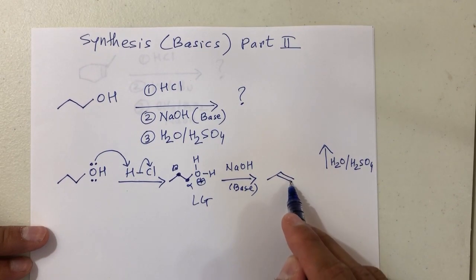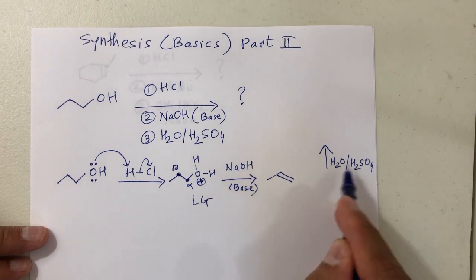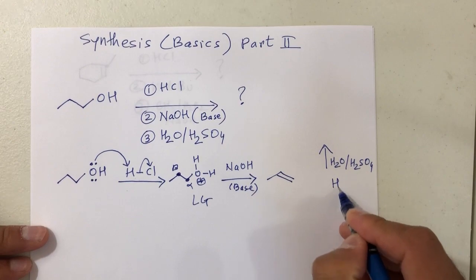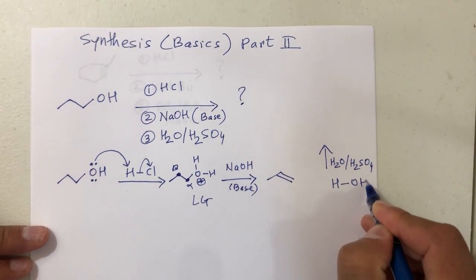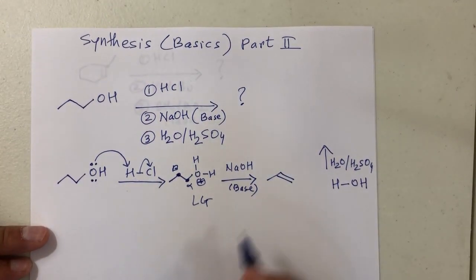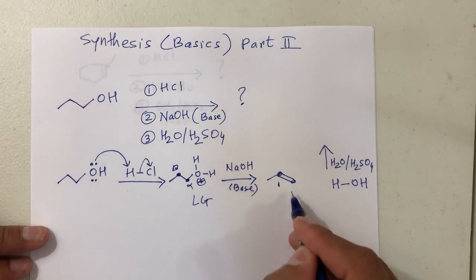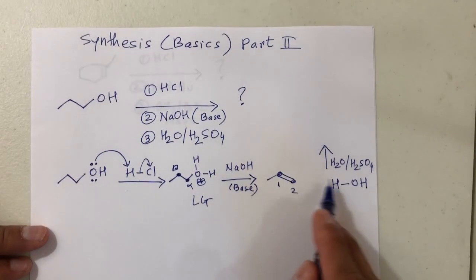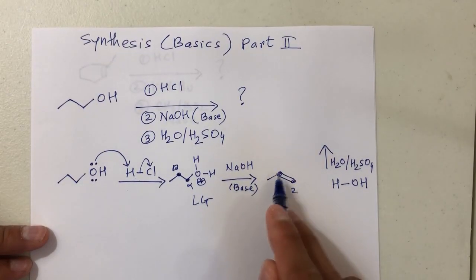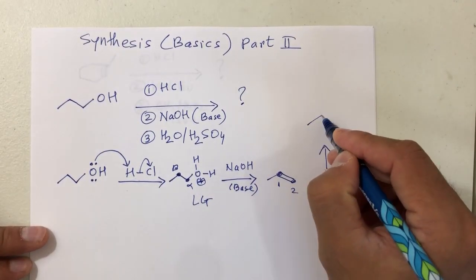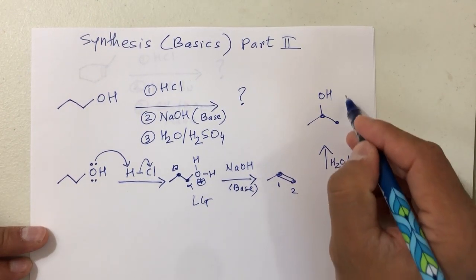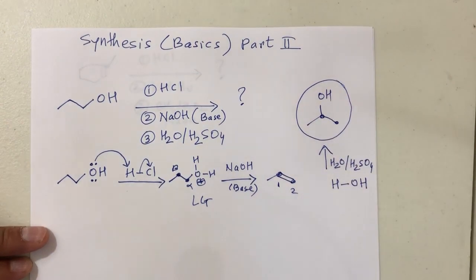Now you're starting with a double bond — you're starting with an alkene. So you're doing an addition reaction, and H2O/H2SO4 is a hydration reaction. In hydration, you add H and OH across the double bond. You have two carbons — carbon 1 and carbon 2 — and those two carbons are not the same. So H will go to carbon 2 and OH will go to carbon 1 according to Markovnikov's rule. That should be your product.